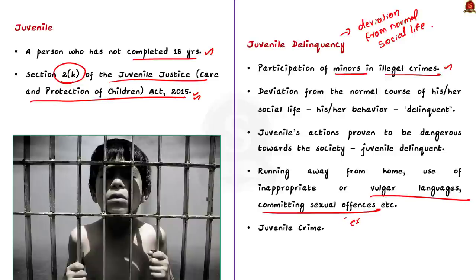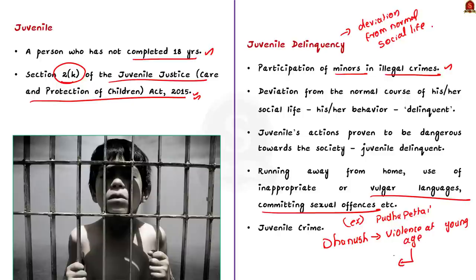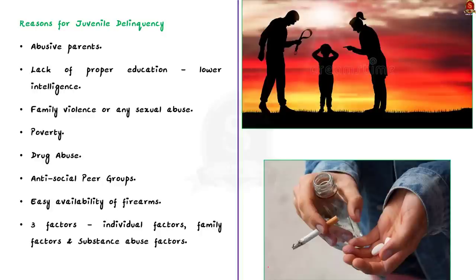To understand this term, think about the movie Pudupetai starring Dhanush. In that movie, during his early life he is accustomed to violence at home — his father kills his mother and Dhanush witnesses it. So he runs away from home, falls into the hands of the drug crime industry in Northern Chennai, and becomes a don. Due to issues in his house, he ended up becoming a juvenile delinquent and further expanding into major crimes. With this understanding, let us see the reasons behind juvenile delinquency. Firstly, if parents are abusive, the core character of the child is affected — the minor would not have received proper education, leading to lower intelligence and more likelihood of delinquent behavior.